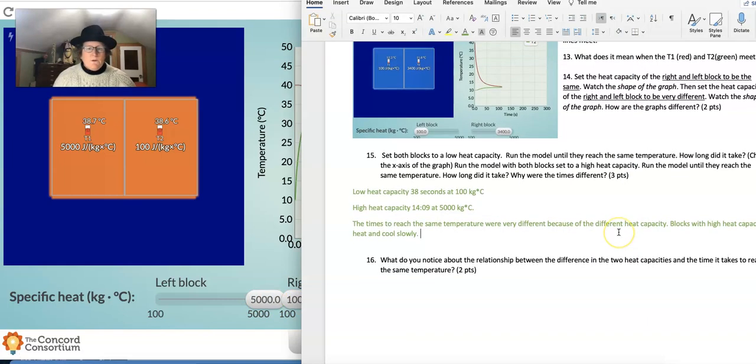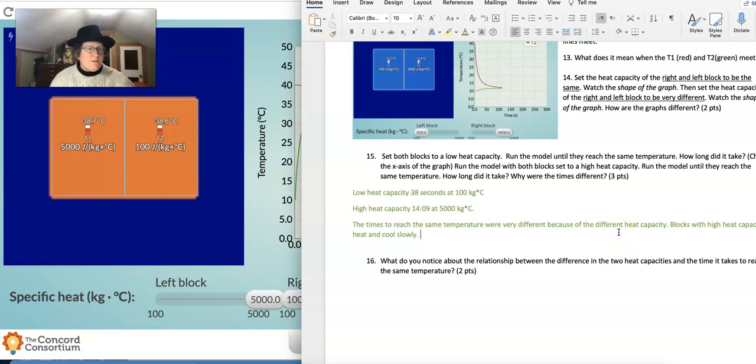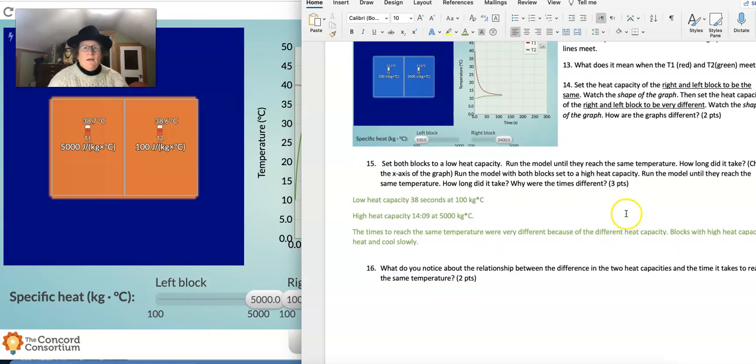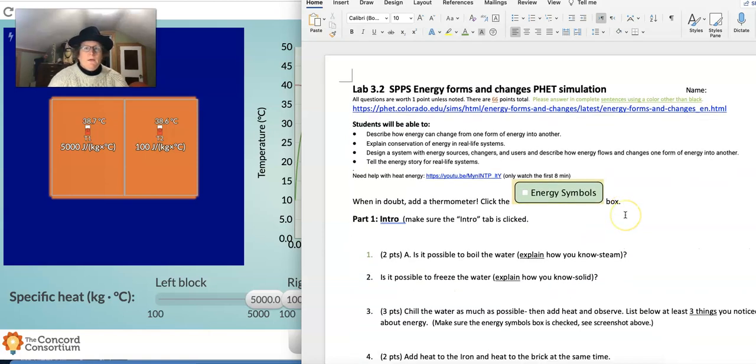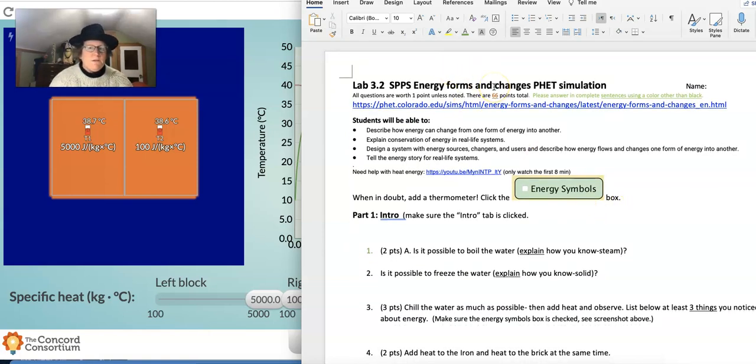So now you have all the information you need to answer questions 1 through 16 on lab 3.2, energy forms and changes in the PhET simulation and also the Concord Consortium simulation. Thank you both to PhET and Concord Consortium for providing excellent simulations for our class. This is Dr. B signing out on Energy Forms and Changes.